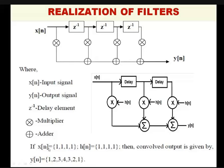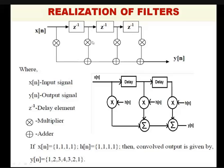There is an example: when x[n] is [1, 1, 1, 1] and h[n] is [1, 1, 1, 1], then the convolution output y[n] is [1, 2, 3, 4, 3, 2, 1]. Let's realize this. When you take the first sample — x[0] which is 1 — this 1 comes here. The remaining 3 places are 0, since those samples haven't been taken yet. So here it is 1, and the other positions are 0. The h[n] coefficients are all 1. So 1×1=1, and 0×1=0 for the rest. The sum is 1, so y[n]=1.